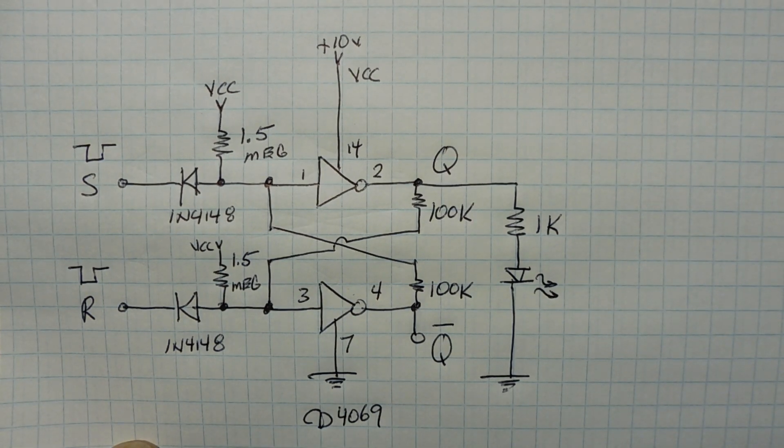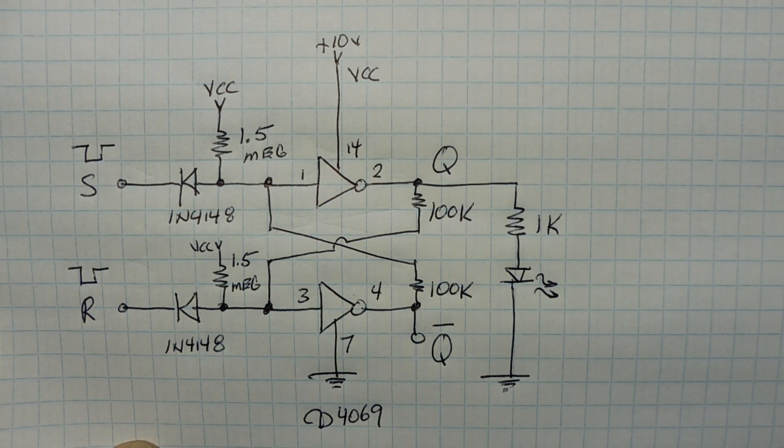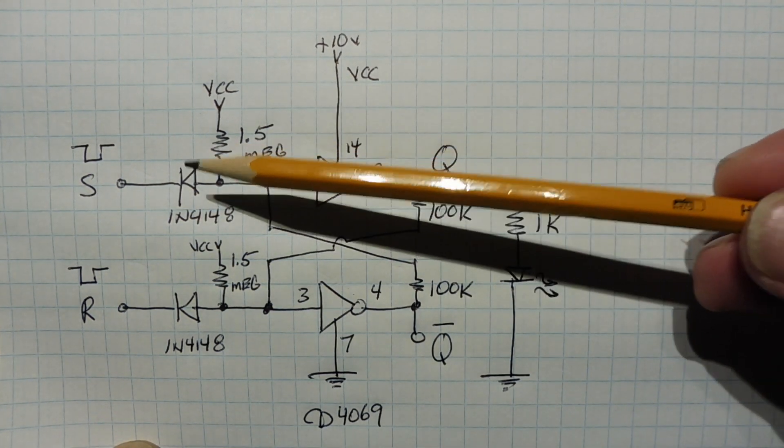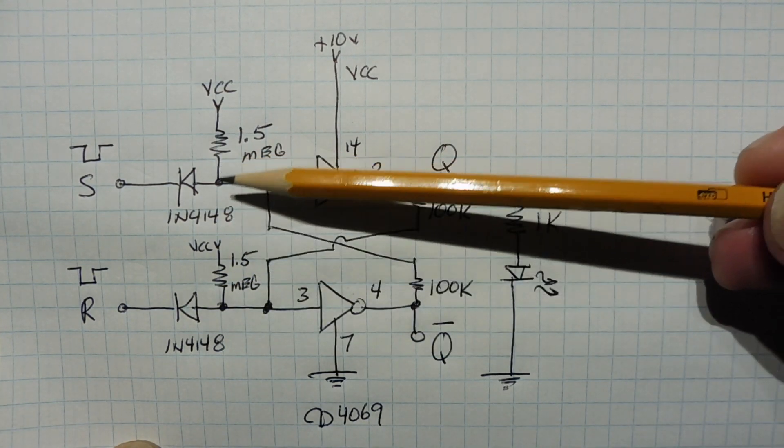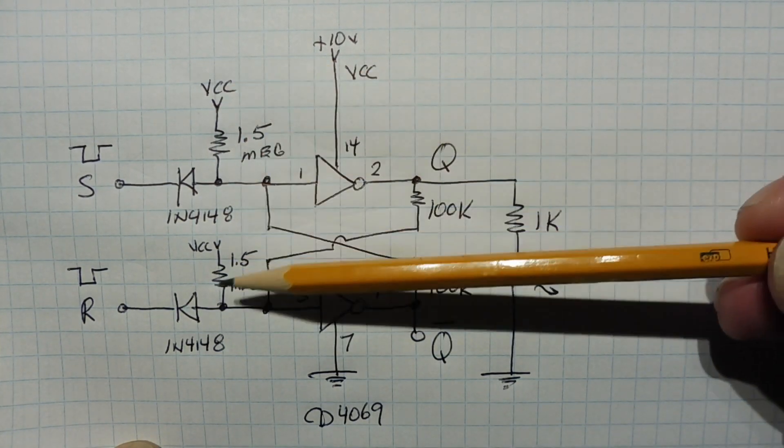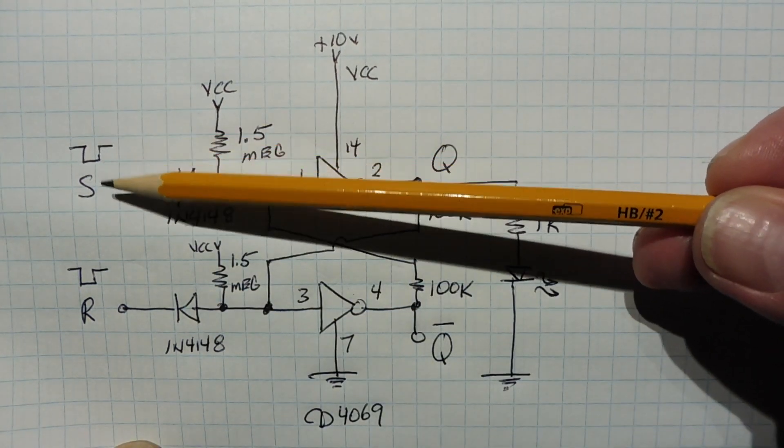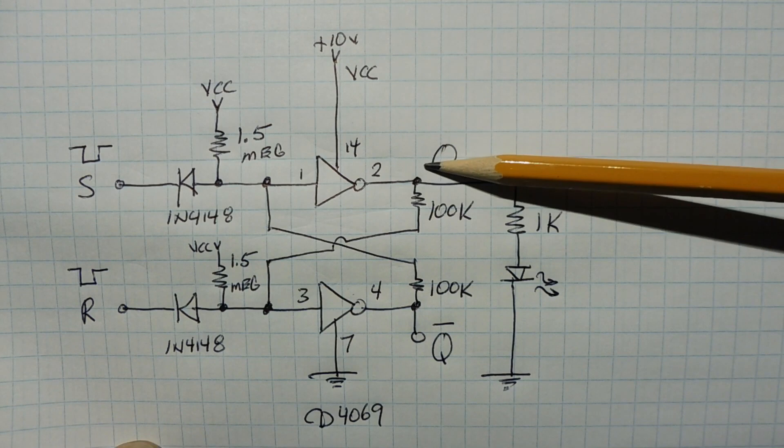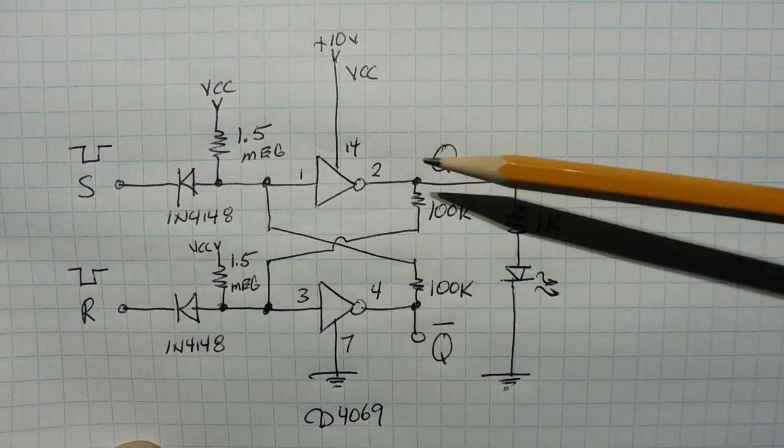Here's the schematic diagram of my negative edge triggered SR flip-flop and all I've done is reverse the two diodes on the set and reset lines and change the weak pull-down resistors to weak pull-up resistors to VCC. So now when we apply a negative going pulse to the set line, Q will go high and if we apply a negative going pulse to the reset line, Q will go low.